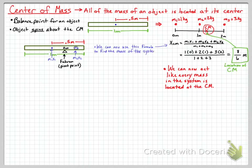Using the fulcrum as the balance point and recognizing the two masses — the mass of the meter stick and the mass of the object placed on it — as parts of the system, we're able to find the total mass of the entire system using the same formula.